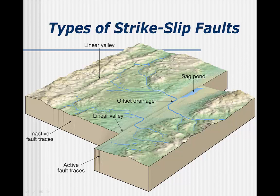Strike-slip faults have experienced side-to-side movement, such as commonly occurs at transform plate boundaries. To determine what kind it is, imagine yourself standing anywhere on the surface within the illustration. Now look toward the fault, then look across it and tell me in what direction the other side appears to have moved. This is an example of a right-lateral strike-slip fault, because the opposite side appears to have moved right. And it doesn't matter what side of the fault you stand on — the answer will still be the same.